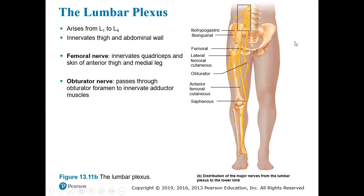When we get to the lumbar plexus, this is from L1 to L4. It innervates the thigh and abdominal wall. The femoral nerve will innervate the quadriceps and skin of the anterior thigh and medial leg. The obturator nerve will pass through the obturator foramen to innervate the adductor thigh muscle group.